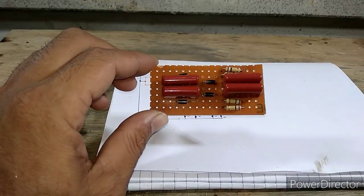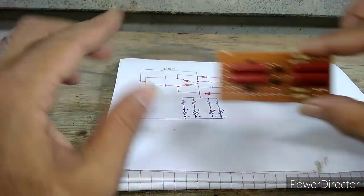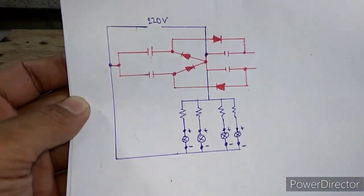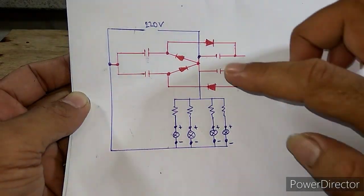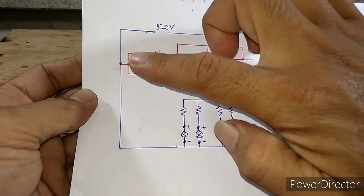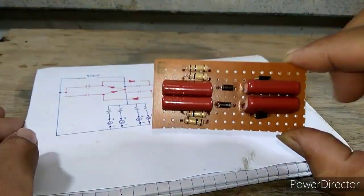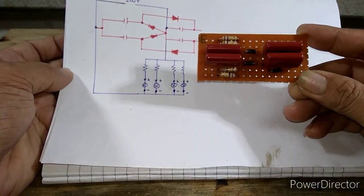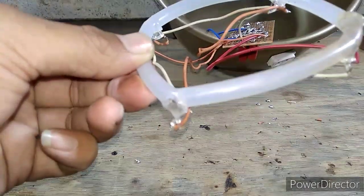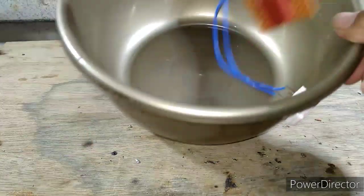Untuk keempat kaki resistor, solder di sebelah sini. Dan kaki positif LED dari keempat LED, solder ke kaki resistor. Untuk kaki negatif LED, solder di sebelah sini. Dan untuk LED nya, saya tambahkan lem bakar supaya nyala LED lebih terang, seperti ini.